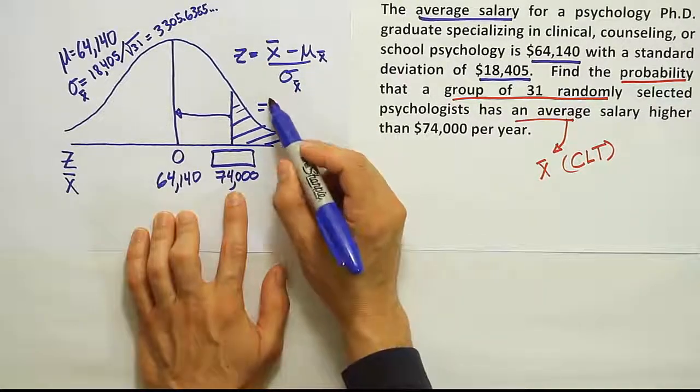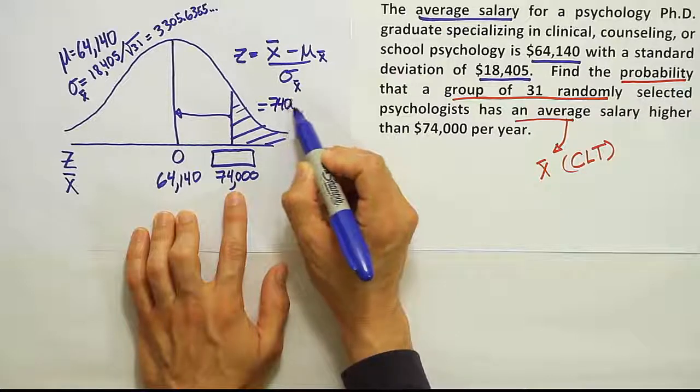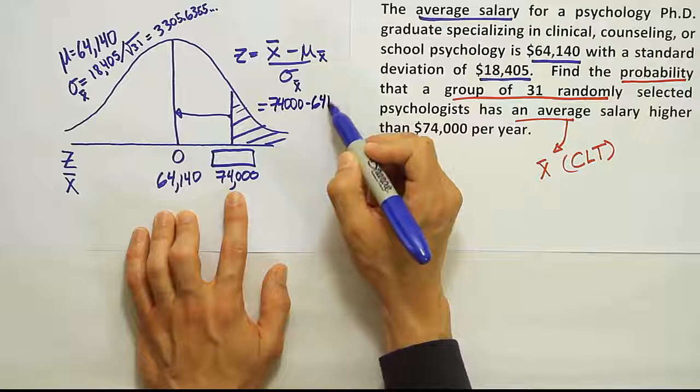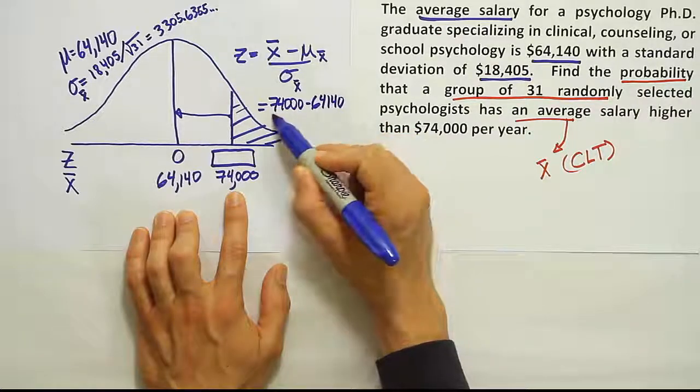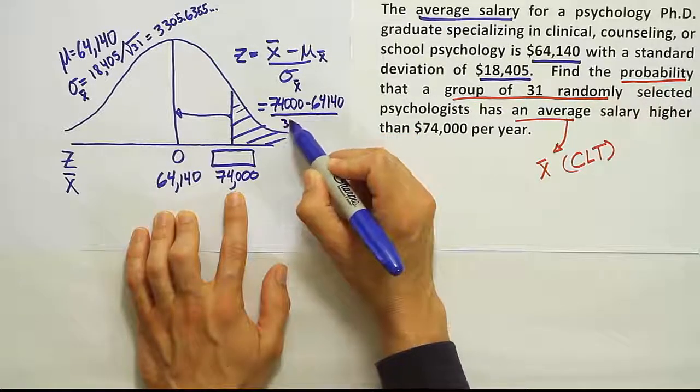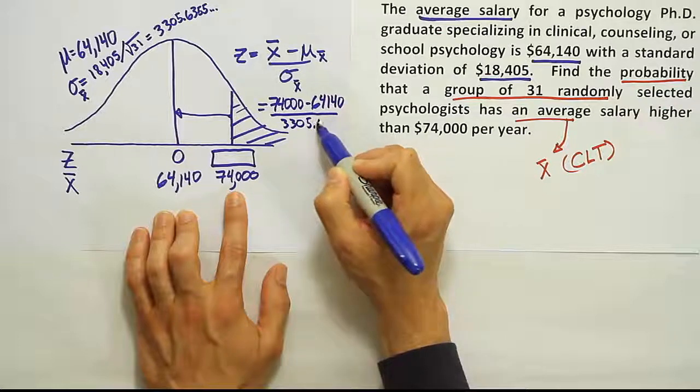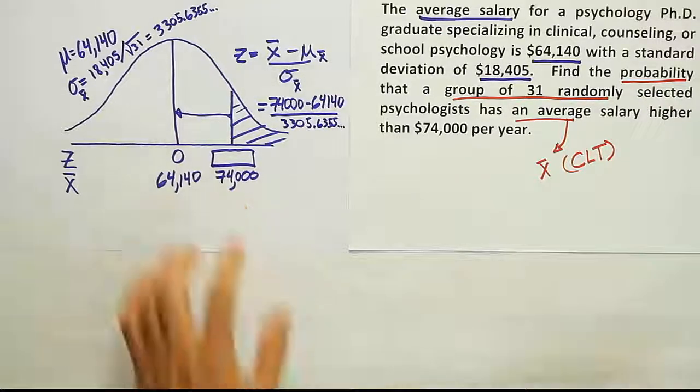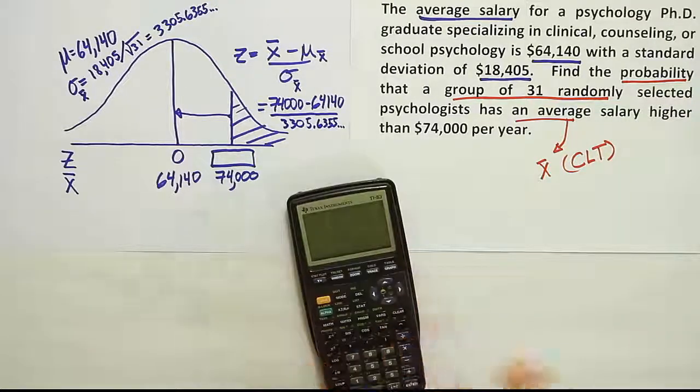So let's plug in the right numbers. We want to convert 74,000, so we'll put that number in here, minus the mean. The mean is 64,140. And then we're going to divide all of that by 3,305.6355 dot dot dot, right? Going on and on forever. All right, so let's do that in our calculators here.